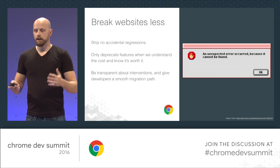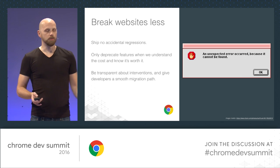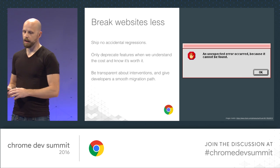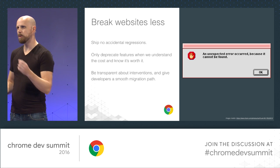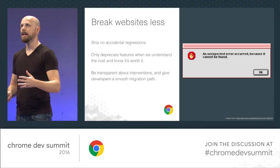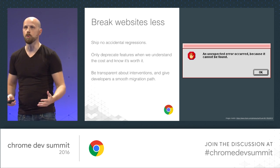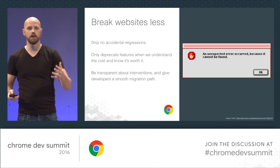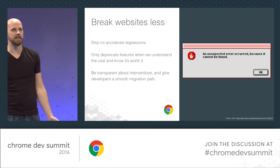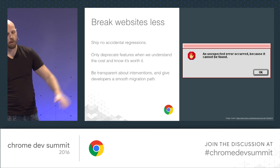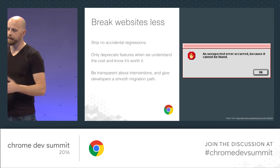Also, trying to diminish or completely get rid of all kinds of polyfills and shims just to cover up for interoperability issues — that's not the way it should be. We also want to make sure that we don't ship any accidental regressions. And when we deprecate features, we really want to understand what we're doing and what the cost is for you. How will this affect you?